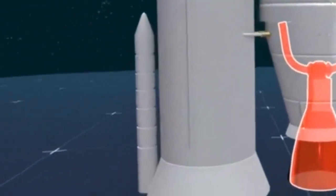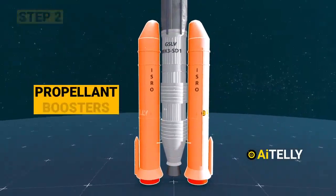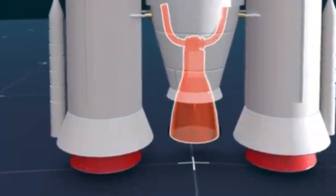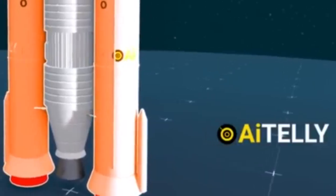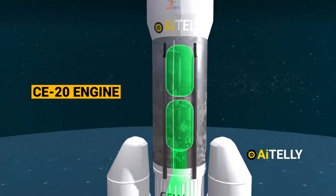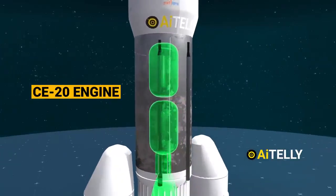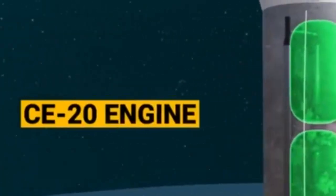Step number two, concurrently two solid propellant boosters contribute extra thrust during the initial launch phase. The upper stage of the LVM-3 incorporates the C-20 engine, an indigenous cryogenic engine developed in-house, furnishing the required thrust to attain the intended orbit.